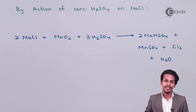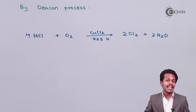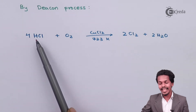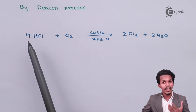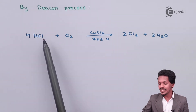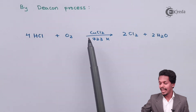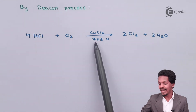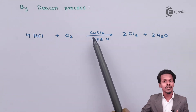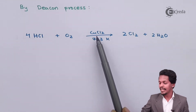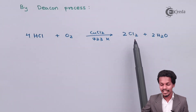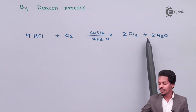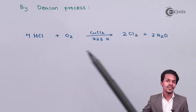The last method is by Deacon's process — converting HCl into Cl2. We treat 4 moles of HCl with oxygen and heat it at 723 Kelvin in the presence of copper chloride as a catalyst. The product obtained is 2 moles of Cl2 along with 2 moles of H2O.